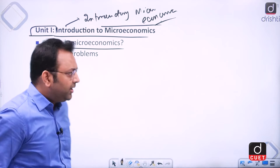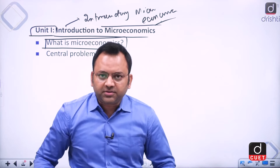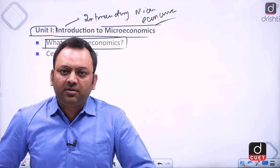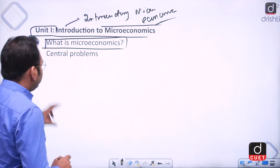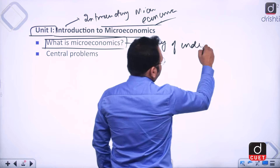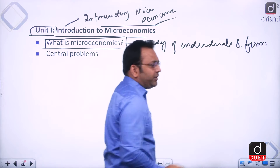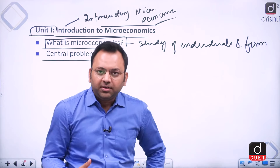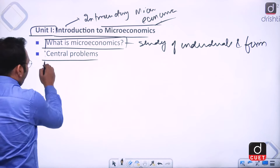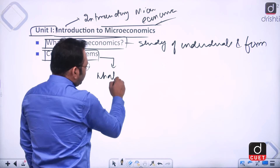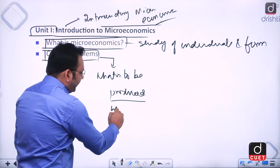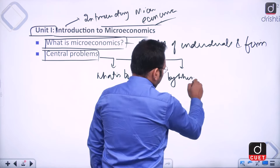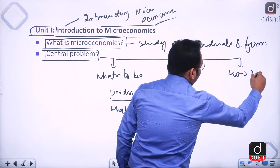In microeconomics, we study the behavior of a consumer or a firm and how they make decisions with respect to some resources. This unit covers the study of individuals and firms with respect to their economic behavior. The central problem here is: what is to be produced, and in what quantities.